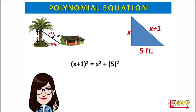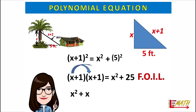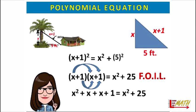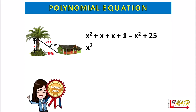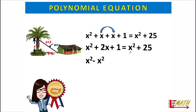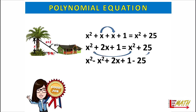By means of substitution, then simplifying, we have (x + 1)(x + 1) equals x squared plus 25. Using the FOIL method, we get x squared plus x plus x plus one equals x squared plus 25. Combining like terms gives us x squared plus 2x plus one equals x squared plus 25. Transforming into standard form: x squared minus x squared plus 2x plus one minus 25 equals zero.